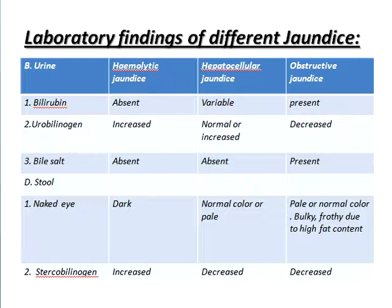Now the findings in urine. Bilirubin: absent in hemolytic jaundice, variable in hepatocellular jaundice, present in obstructive jaundice. Urobilinogen: present in hemolytic jaundice, normal or variable in hepatocellular jaundice, absent in obstructive jaundice.